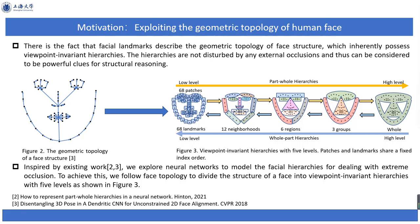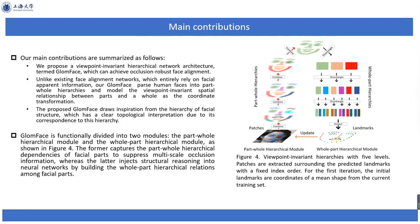To achieve this, we follow face topology to divide the structure of a face into a viewpoint invariant hierarchy with five levels, as shown in figure 3, and design a new network architecture based on the hierarchy. We propose a viewpoint invariant hierarchical network architecture, termed GLOMFACE, to achieve occlusion-robust face alignment. GLOMFACE parses human faces into part-whole hierarchies and models the viewpoint invariant spatial relationship between parts and whole as the coordinate transformation.